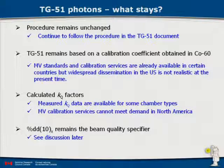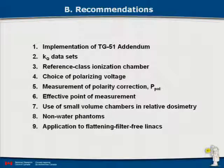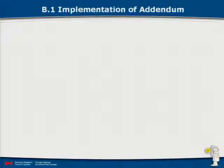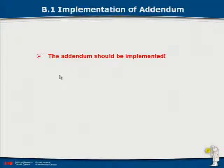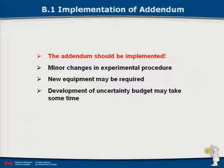The recommendations for implementation in the new addendum cover: KQ data sets, definition of a reference class ionization chamber, recommendations about polarizing voltage and polarity, effective point of measurement, small chambers, non-water phantoms, and flattening filter-free linacs. The basic guidance is you should implement the addendum when it's out. The good news is the changes are minor, so the effort required should be fairly straightforward. Some new equipment may be required because of other recommendations. The uncertainty budget may take some time, but the actual procedure will remain very similar in how long it takes to implement annually.